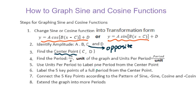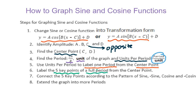Then check what kind of graph paper you got. You figure out the period and then the unit of the graph. Then use the period divided by units to figure out for each period how many units are needed. Then use the units per period to label one period from the center point. You need to figure out the five key points of a full period from the center point. I will talk about those five key points later on.